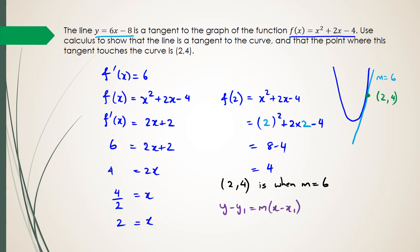And when I do this, I use the 4 from here. So y minus 4 is equal to the 6 from here, x minus x1, which is the 2. And what I'm ending up with is y minus 4 is equal to 6x minus 12. And when I rearrange this, I'm going to get y is equal to 6x minus 12 plus 4. So therefore, y is equal to 6x minus 8. And that's what our original equation for the tangent was.